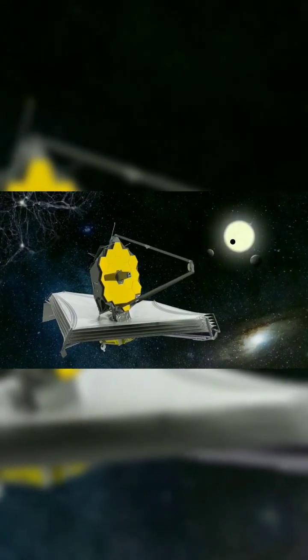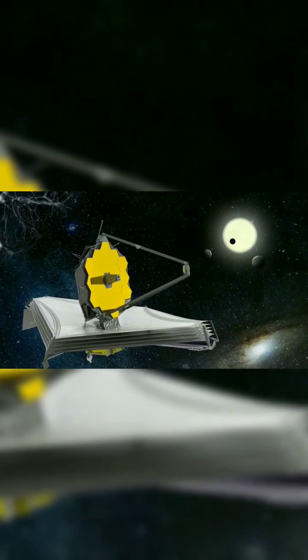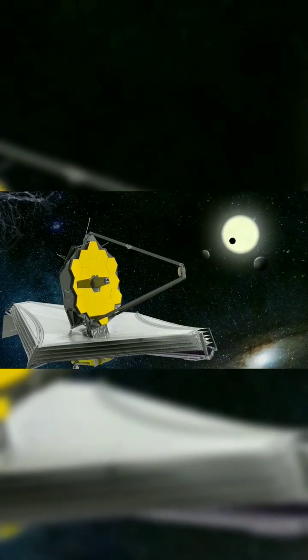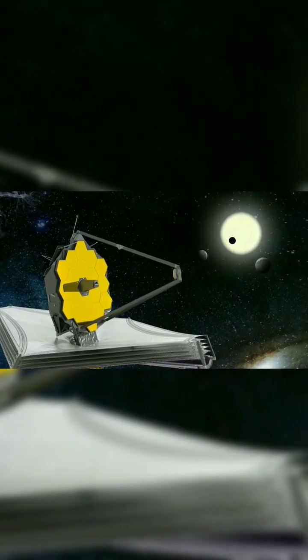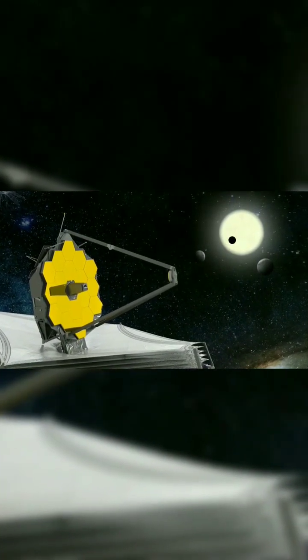James Webb is on its mission for 32 days now and finally it has captured the image of an exoplanet located at about 385 light years away from us.